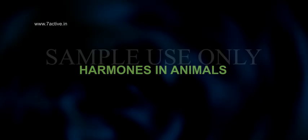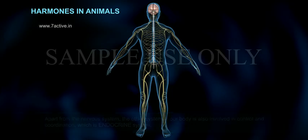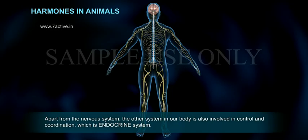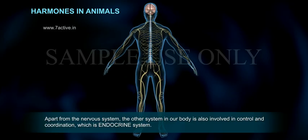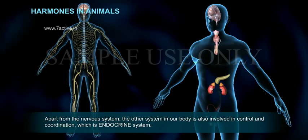Hormones in Animals. In our earlier topic, we have learnt how the nervous system is involved in control and coordination in living beings. Apart from the nervous system, the other system in our body also involved in control and coordination is the endocrine system.